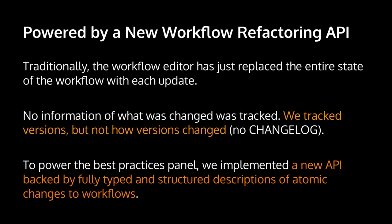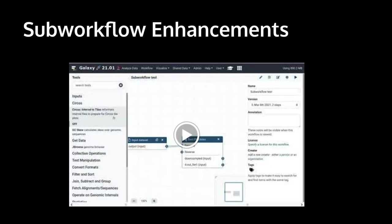Traditionally, the workflow editor has just replaced the entire state of the workflow with each update — no information on what changed was tracked. We tracked the versions, but not how versions changed. To power this best practices panel, we implemented a whole new API backed by fully typed and structured Pydantic descriptions of atomic changes to workflows that are persistent with each save. This infrastructure sets the stage for many cool things beyond just the best practice panel.